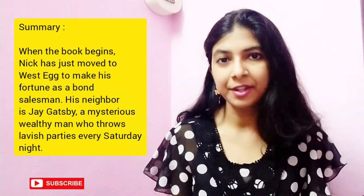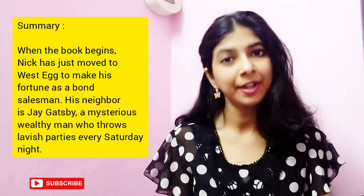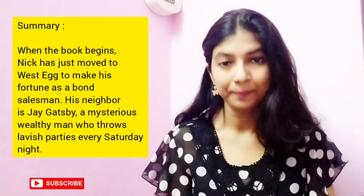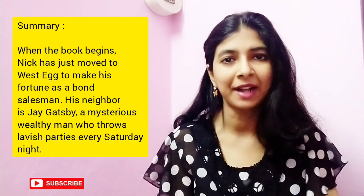Now let's take a look at the detailed summary of the novel. Nick Carraway is the narrator. When the book begins, we see that Nick has moved to the West Egg district and wants to make his fortune as a bond salesman. In West Egg, the newly rich live, whereas in East Egg, the traditional rich live. Nick's wealthy neighbor is Jay Gatsby, who lives in a huge gothic mansion and throws lavish parties every Saturday night.